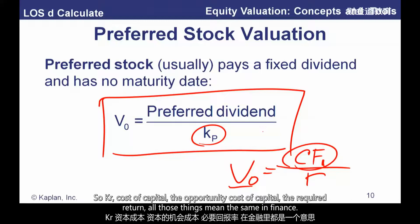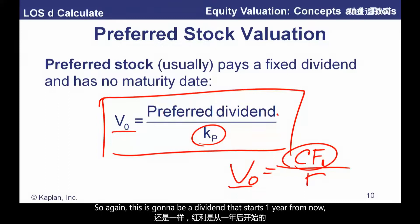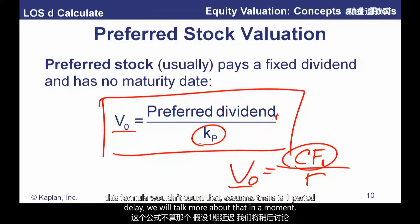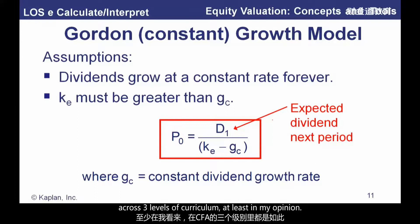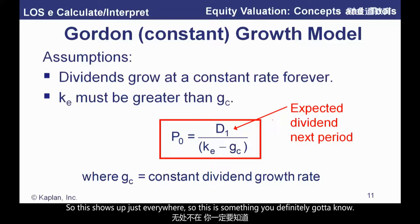This is the Gordon Growth Model, and in my opinion, it's one of the two most used formulas across all three levels of the CFA curriculum — either this or the capital asset pricing model. This shows up everywhere, so this is something you've definitely got to know. The beauty of this thing is that it's an infinite geometric series, which just means it collapses on itself. If we have a growing perpetuity — dividends starting at $1 at time one, growing at a constant rate forever — this formula gives us the exact present value. It's not an approximation.